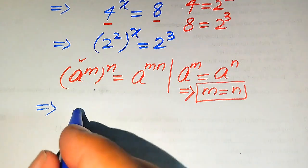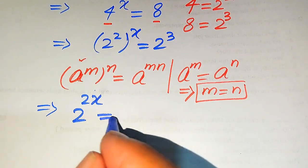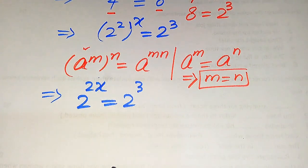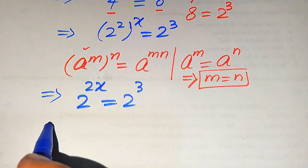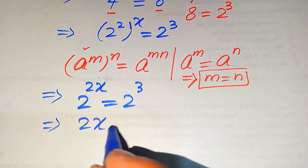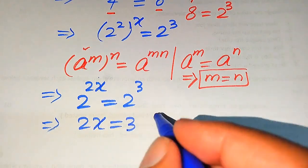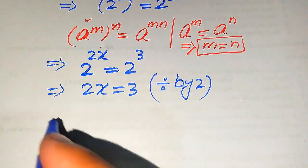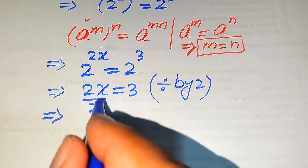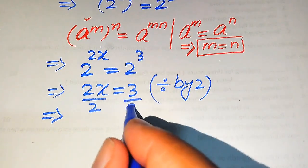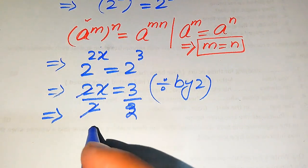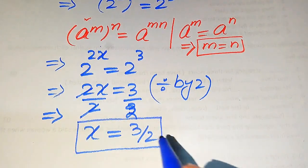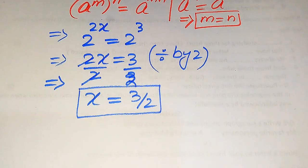Applying the first exponential law to the left-hand side, we multiply the exponents: 2 to the power of 2x equals 2 to the power of 3. Since the bases are the same on both sides, we equate the exponents to get 2x equals 3. Dividing both sides by 2, the 2s cancel and we get x equals 3 over 2.